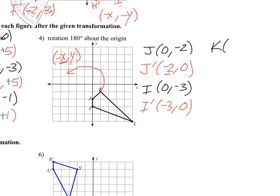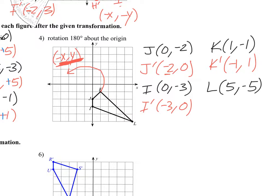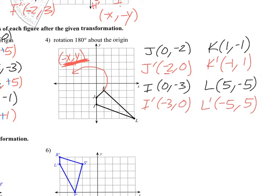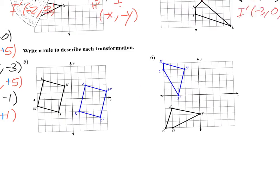K is at 1, negative 1. First thing I do, I switch my X and Y. Then look — X has to be negative, Y positive. That's what I get here: X is negative, Y is positive. So when you're doing a 180 degree rotation, all you're really doing is switching the X and Y. Where was L? L at 5, negative 5. When you switch them, you get negative 5, 5 — which is what has to happen: X negative, Y positive. You may need some help with that, so just ask for it.